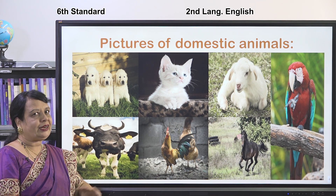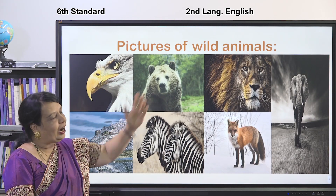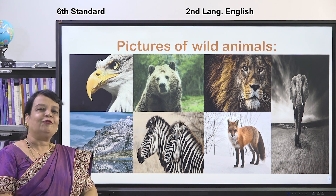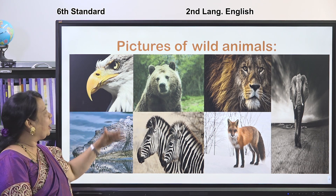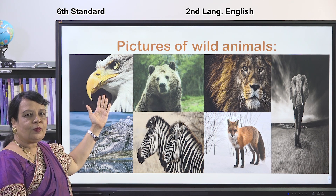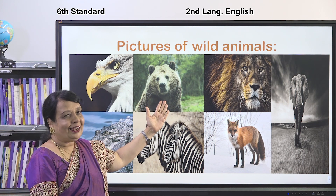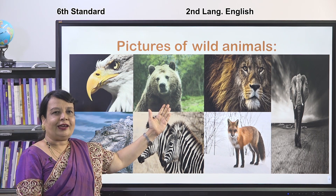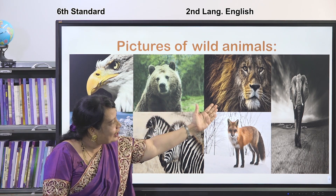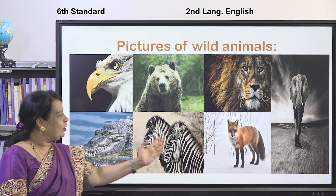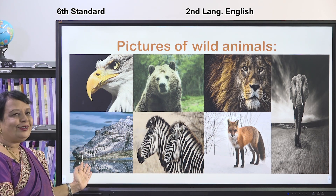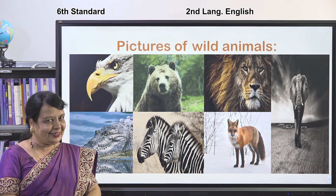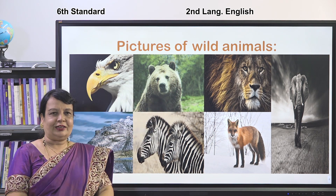Now we are going to look at wild animals. Those who live in a forest are called wild animals. Here you can see: a bear, an eagle, a lion, an elephant, a wolf, a zebra, and a crocodile. All these live in a forest. These are called wild animals.